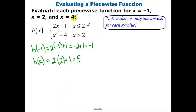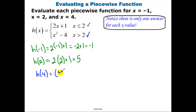Now for x equals 4. We decide: is 4 less than or equal to 2, or greater than 2? Well, 4 is greater than 2. So to find h of 4 we use our bottom function. We get 16 minus 4, which is 12. That's evaluating our piecewise function.